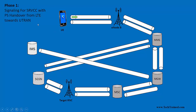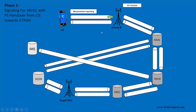The first thing to understand is that in case of any handover in LTE, there needs to be an event to take place. In this case, if the UE is going into bad coverage, event A2 needs to take place and the UE is going to send a measurement report, as you can see on the screen.